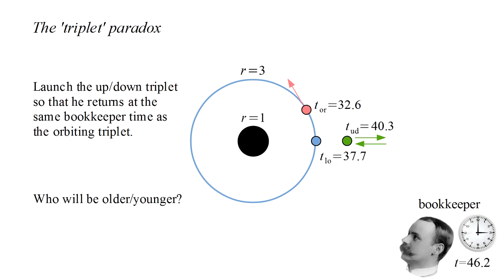So the orbiting and up-down paths are indeed spacetime geodesics. Each locally maximizes the elapsed time on a clock moving between the same two events.